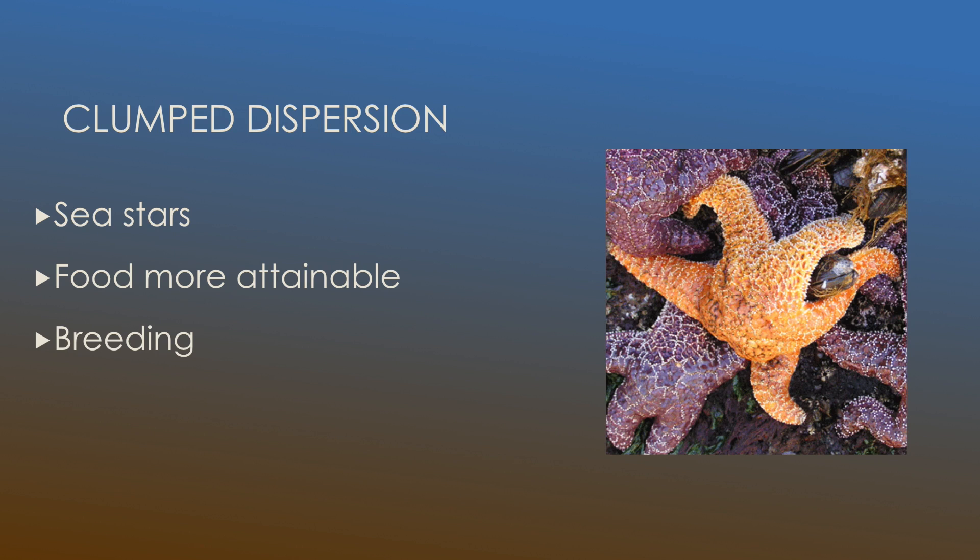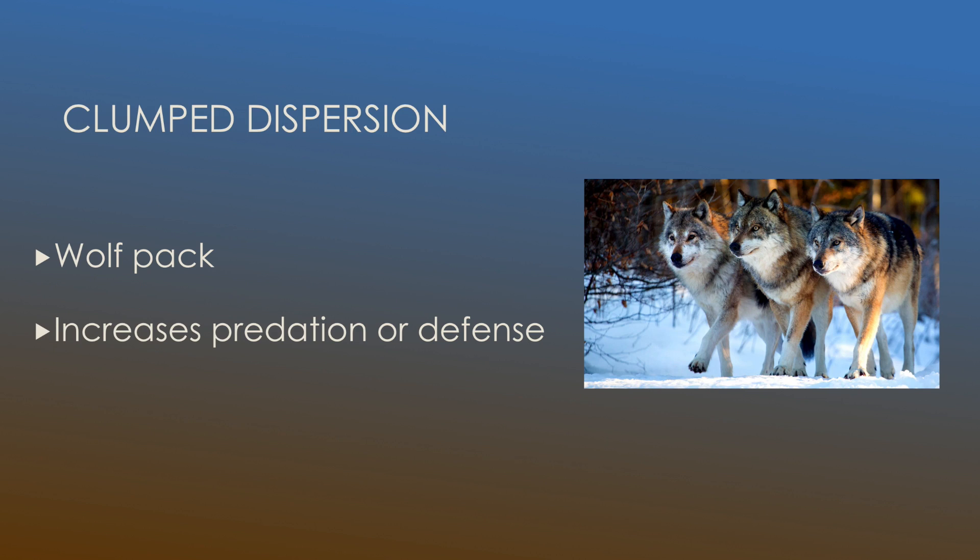Our third example of clump dispersion is a wolf pack and this is a very common example because these wolves will oftentimes join together and roam together. This allows them not only to be more vicious predators but it also allows them to defend one another in the case of a predator attacking them.